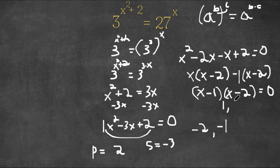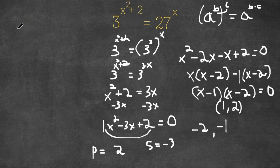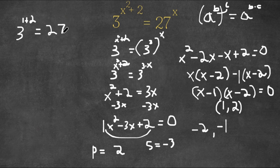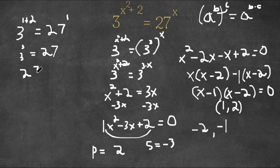Our two solutions are x equals 1 and x equals 2, because if you plug in 1 it makes the whole equation equal 0, and the same goes for 2. So our answers are 1 and 2. Now let's plug in 1 to the original equation: 3 to the power of 1 squared plus 2 equals 27 to the power of 1. Now 1 plus 2 is 3, so we have 3 to the power of 3 equals 27, and 27 to the power of 1 is 27 and 3 to the power of 3 is 27.